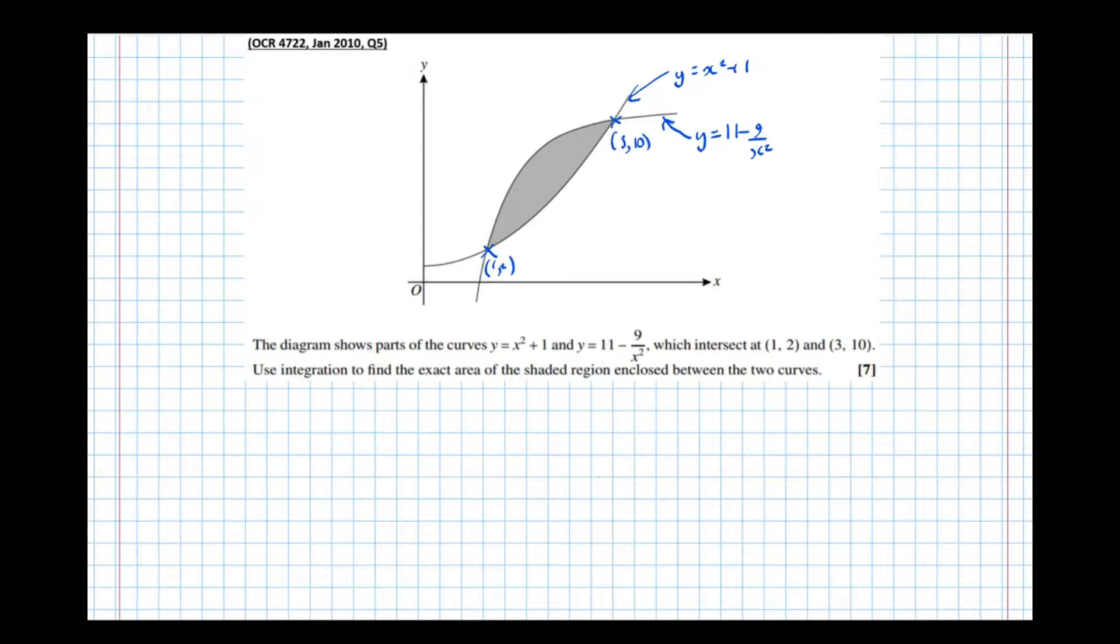So it says use integration to find the exact area of the shaded region enclosed between the two curves. So to illustrate what we need to find, I'm just going to do a couple of markings on the diagram. So we're going to put vertical lines where the two intersect.